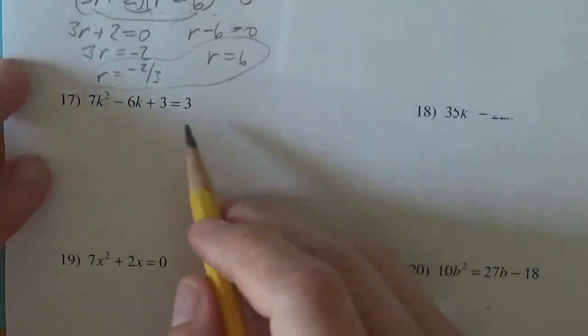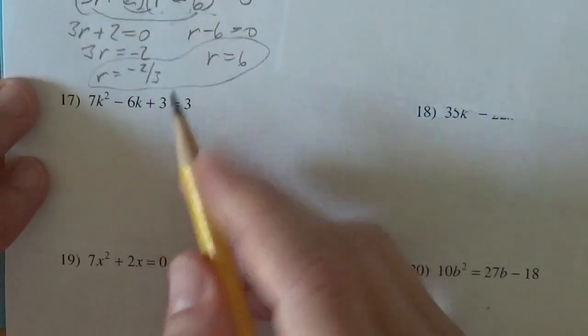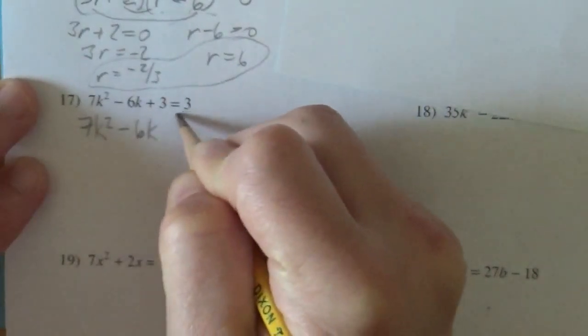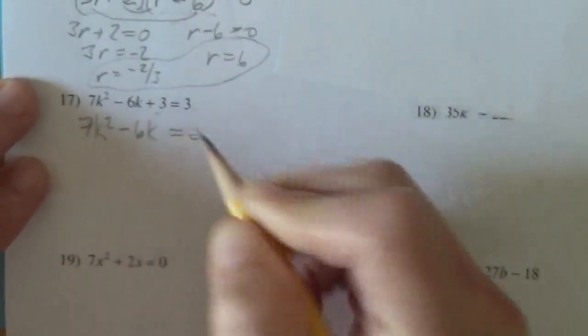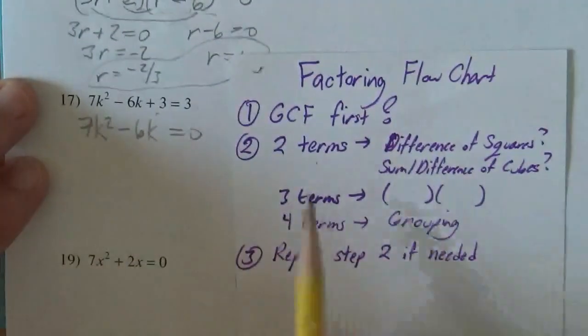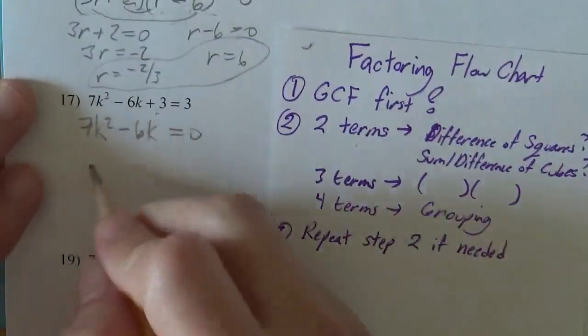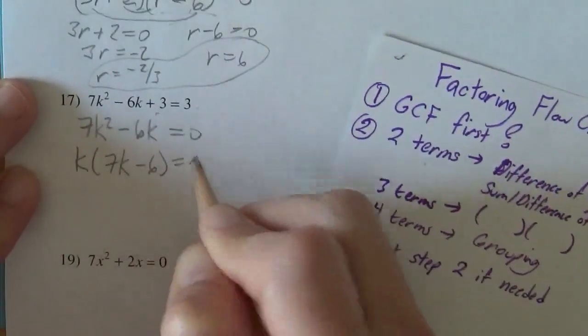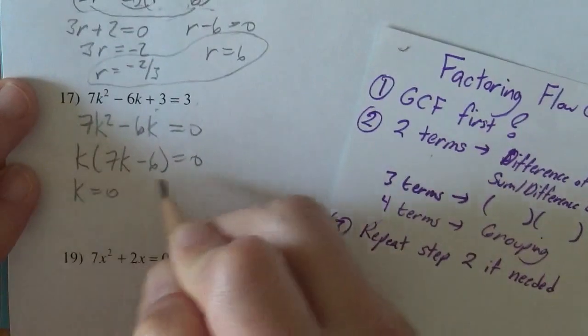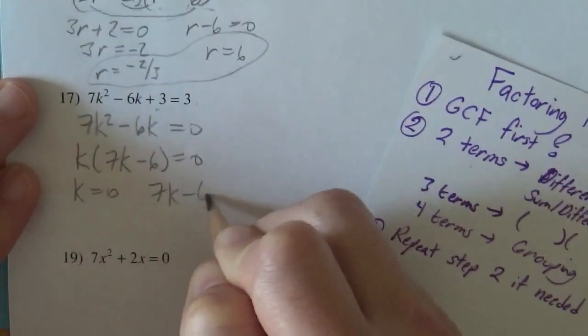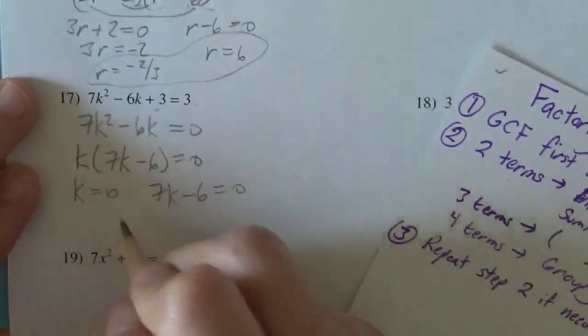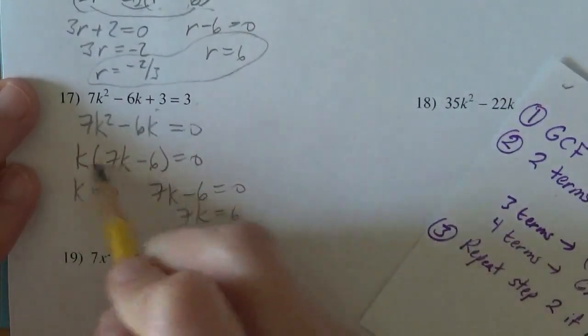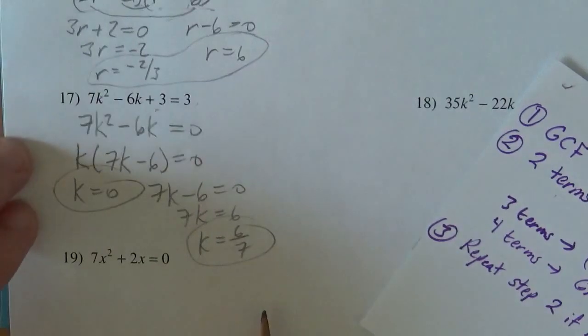Let's do it again. So if I subtract the three on this one, I'll get seven k squared minus six k, and it'll end up equaling zero. Again, GCF first. So I want to factor out a k. So seven k minus six equals zero. So either the k will equal zero or the seven k minus six will equal zero. So seven k equals six, so k equals six sevenths. So two answers for you.